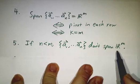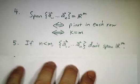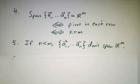So if you have three vectors in R^5, they can't span R^5. There aren't enough of them. You need at least five vectors to span R^5. You need at least seven vectors to span R^7.